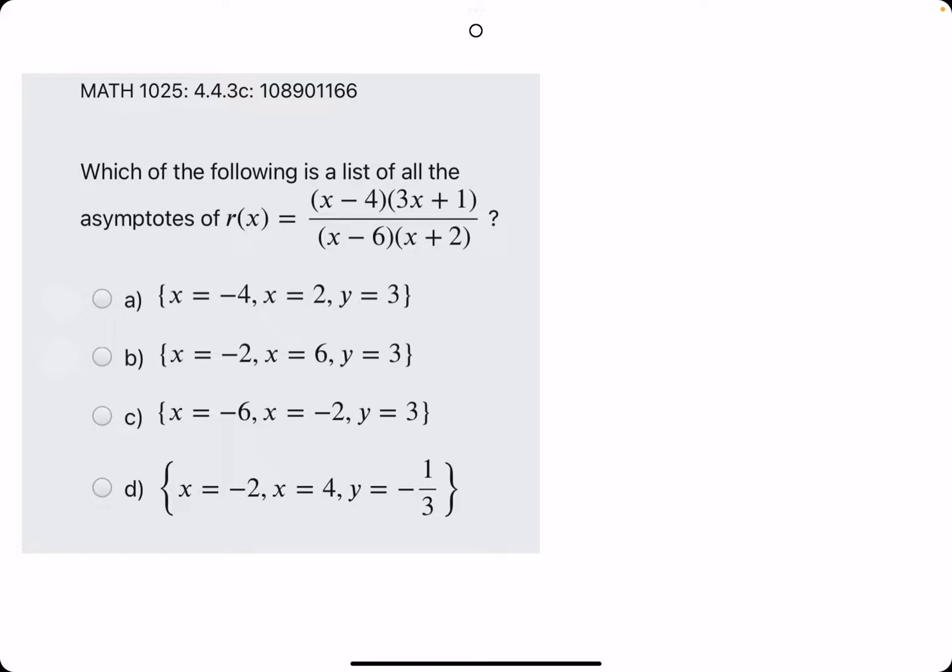So the vertical asymptotes will be the x values that make the denominator equal to zero. So if we have anything up top divided by zero, we're going to get an undefined function value. So if we find the x values that make the denominator equal to zero, then we will have the x values, the locations of our vertical asymptotes.